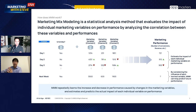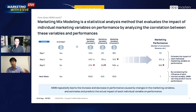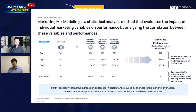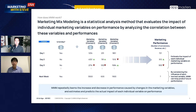If you have all these marketing variables on one hand, and you have some outcomes — for example, the number of installs per day, the total revenue per day — if you have these two types of inputs, marketing variables and performances, MMM models, which are usually based on machine learning such as regression or Bayesian statistical methodology, will find the correlation between these variables and performances. By doing that, they learn how increases and decreases in performance are caused by changes in marketing variables, and estimate the actual impact of each individual variable on performance.